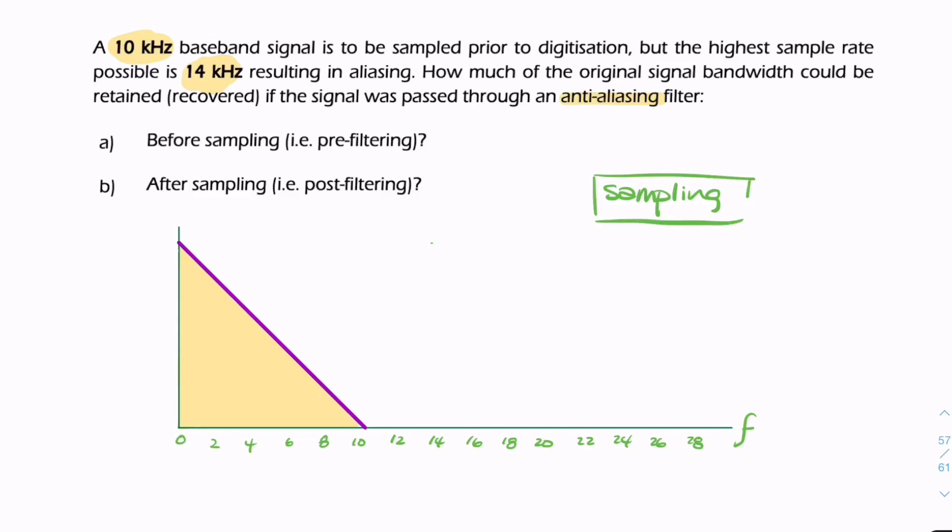we use a low pass filter. The low pass filter can come either before or after the sampler. The question is: how much of the original bandwidth will be retained if we filter before sampling versus after the sampling process?